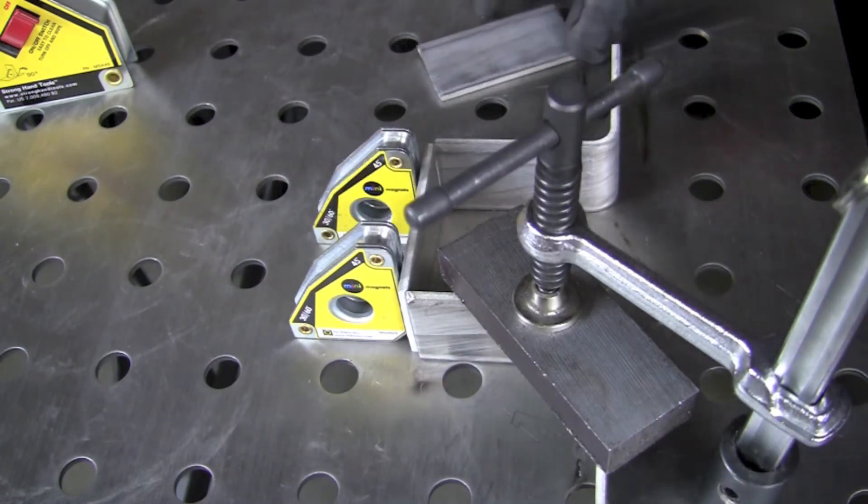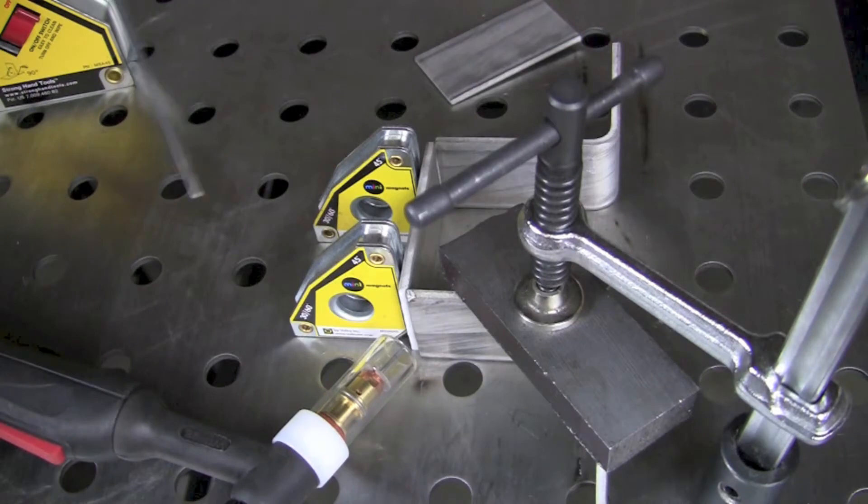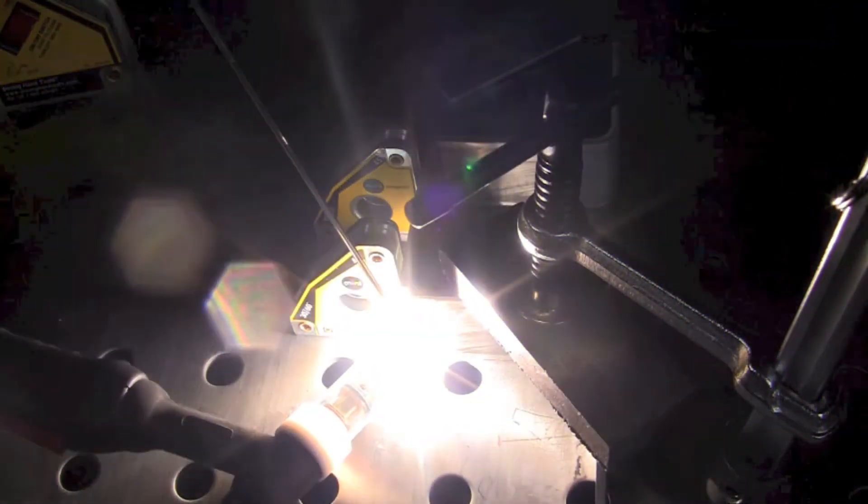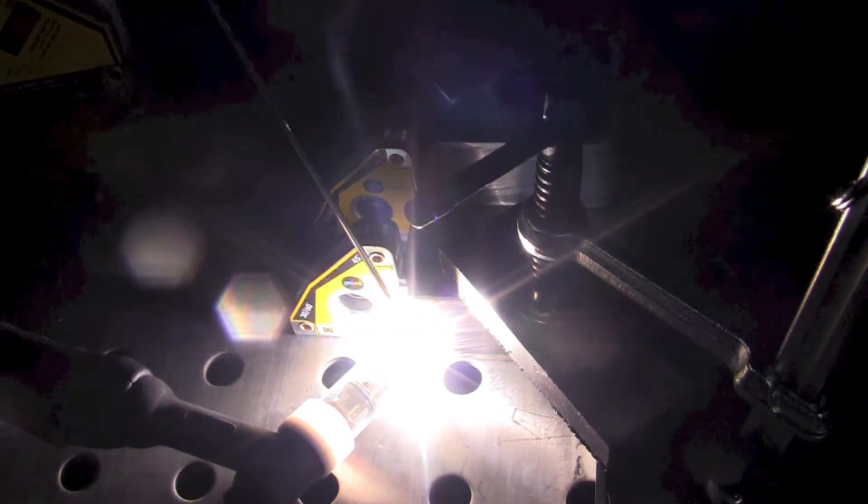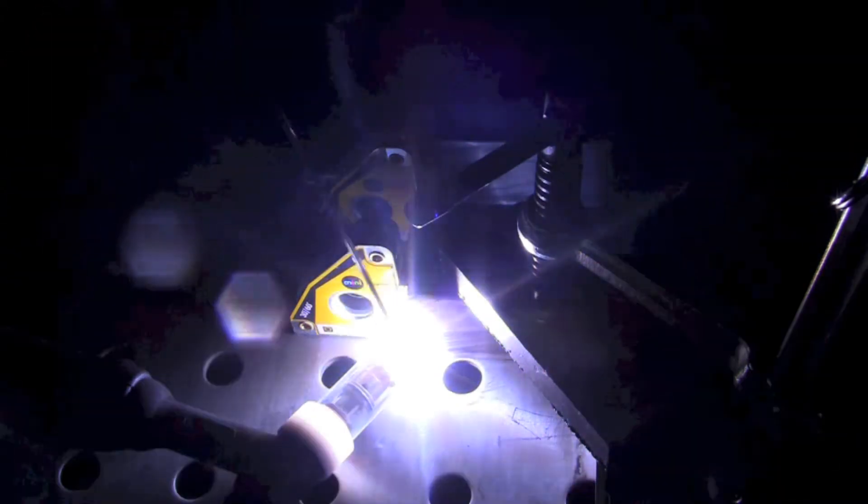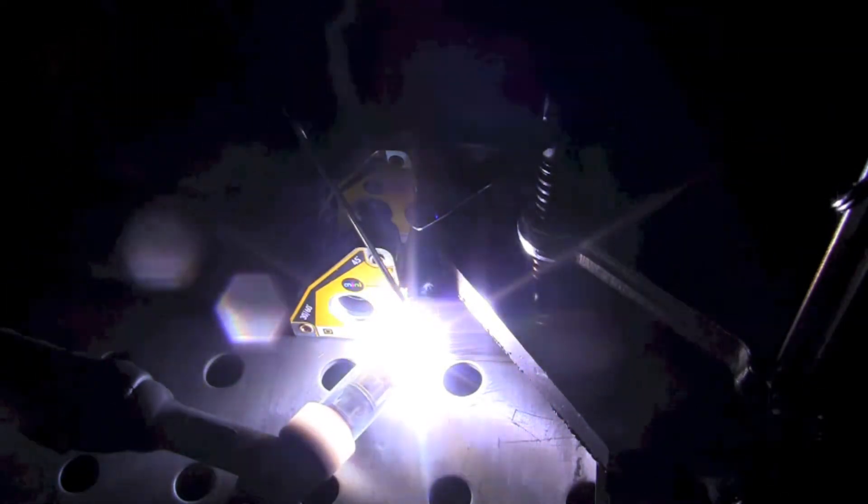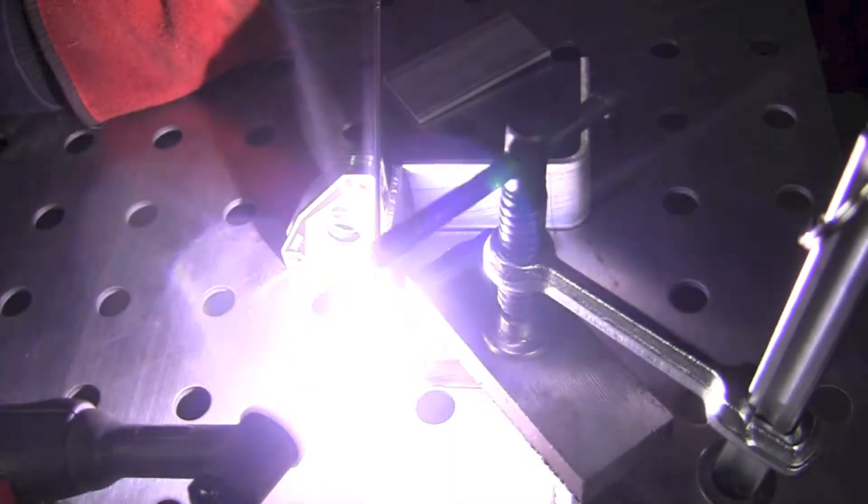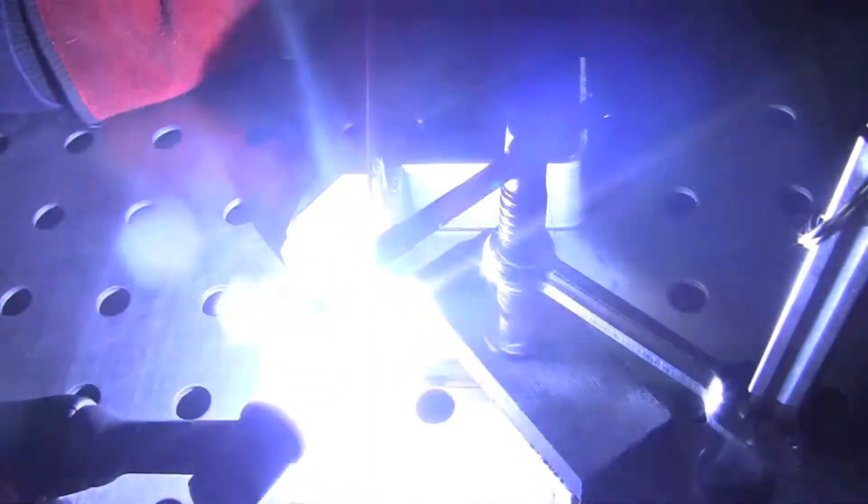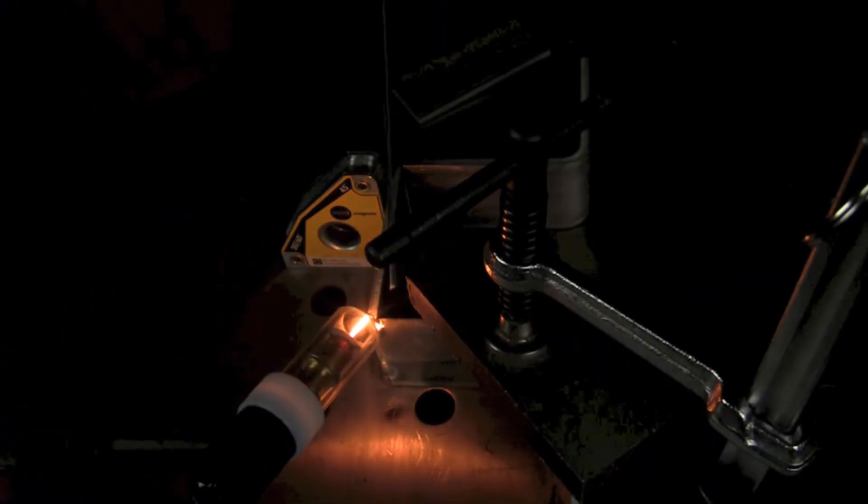So once we got that clamped in position, then we're going to go ahead and make a tack weld on the bottom here first. Once again when that's down against the table there, that can take a little extra heat, need a little extra time before it actually makes the tack weld. Then we're going to go ahead and move up to that upper corner there and get another tack weld on that as well.